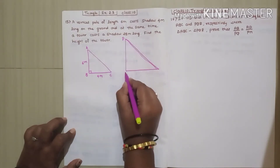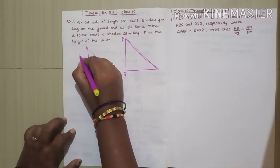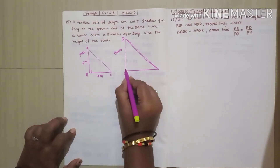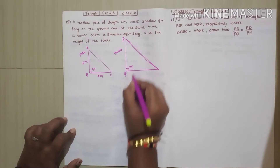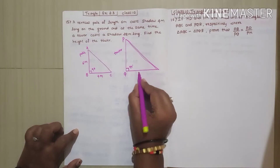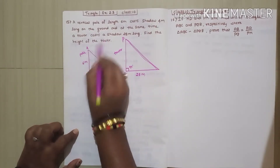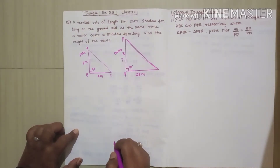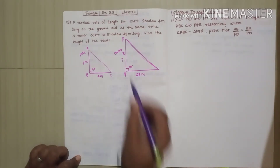PQ is the tower. This is the pole and this is the tower, and this also will be perpendicular to the ground — 90 degrees. This tower casts a shadow of 28 meters. We need to find the height of the tower; I will take that as x.